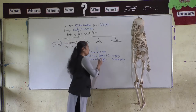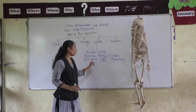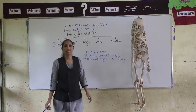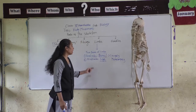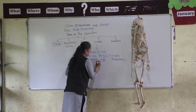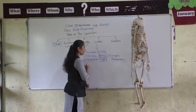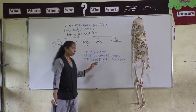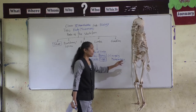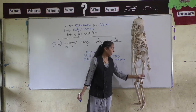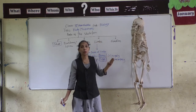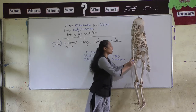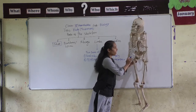That is all about the arms or forelimbs. Now we will discuss the next pair of limbs — the hind limbs or legs. The hind limbs or legs are connected to the spine with the help of the pelvic girdle.